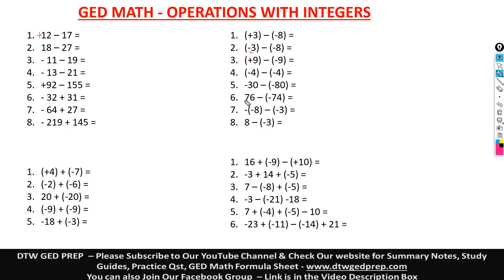Sometimes for a positive number the sign isn't shown, but in some questions you will see the positive sign there. For 17, the sign is negative. The sign of a number is always before it — always before it, not after it.